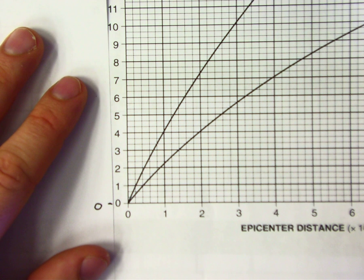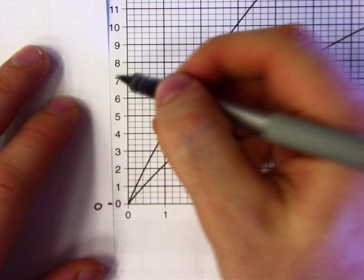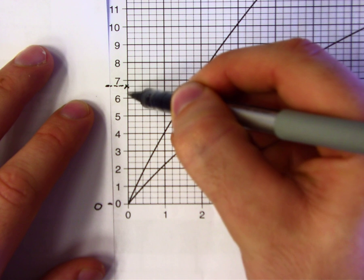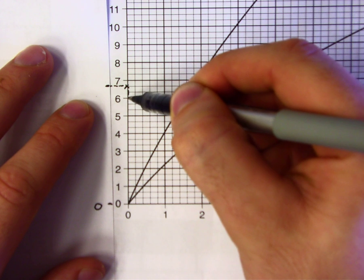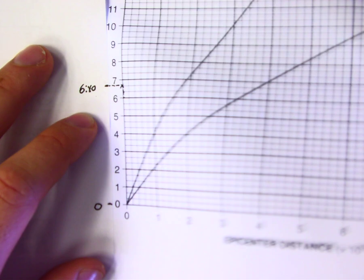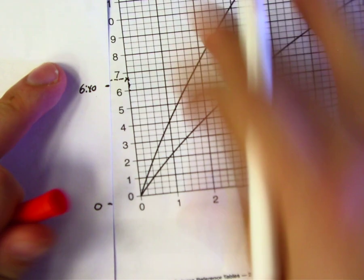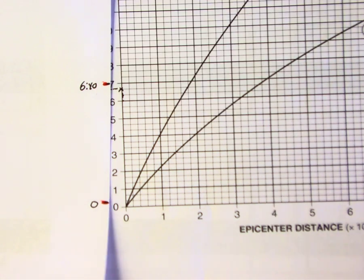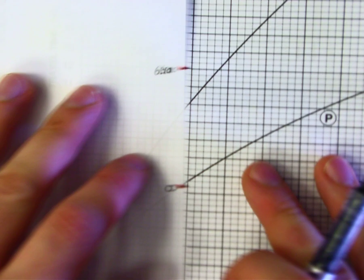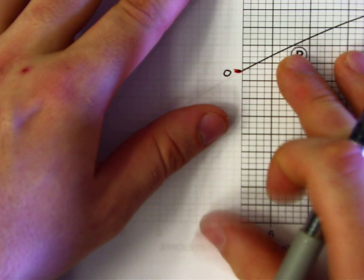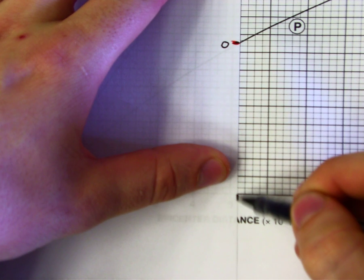Each interval on the chart goes by 20 seconds, so you mark 6 minutes, 6 minutes 20 seconds, and 6 minutes 40 seconds. Trace it up to where the S and P lines meet — they cross right about there. Trace that crossing point down to the distance axis, keeping it parallel. It crosses right around 5,200 kilometers, since each interval on the distance axis goes by 200. So your epicenter distance is 5,200 kilometers.